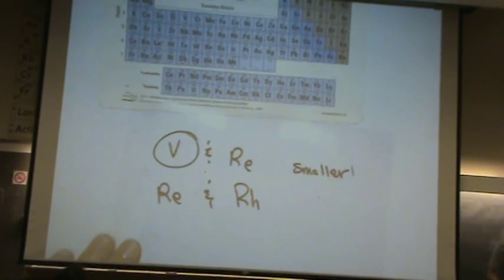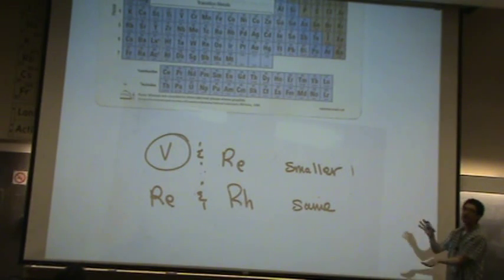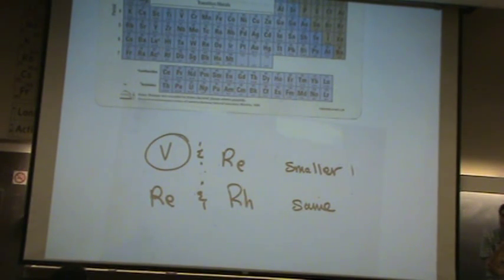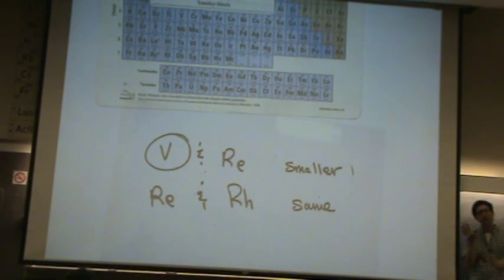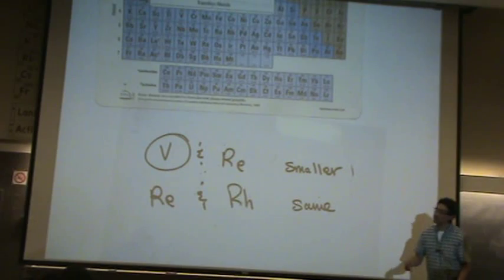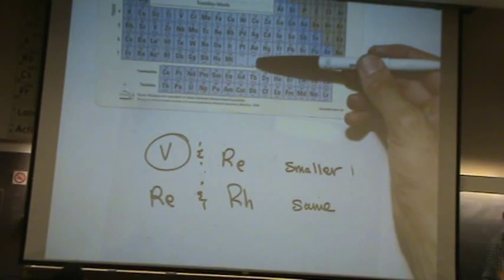Versus rhenium and rhodium — which one's smaller? They're effectively the same size, because they're pretty close on the periodic table as far as the columns, and they're in the second and third row, so they're effectively the same size. If they're in the 4D or 5D row and within two, three, maybe four columns of each other, they're going to be the same size.